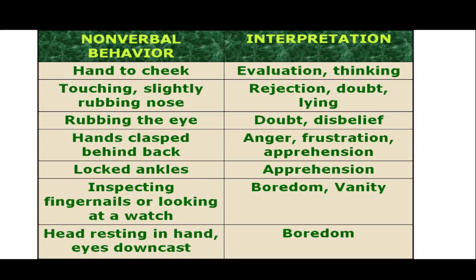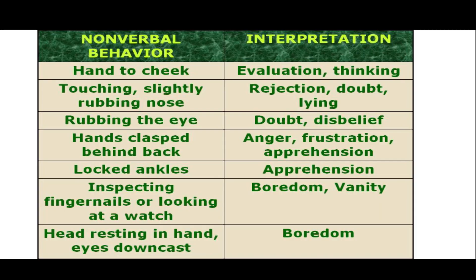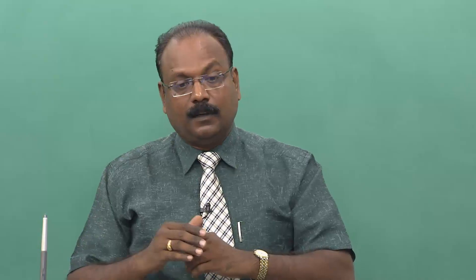Hands clasped behind the back — you are just hiding that it is clasped — can show that you are angry, frustrated, or apprehensive. Locked ankles: again apprehension. Inspecting fingernails or looking at a watch while talking to somebody frequently indicates 'I am bored,' or it can show vanity — 'What kind of nonsense are you talking?' It is suggested that if you know somebody is boring you, looking at your fingernails or at the clock on the wall will indicate to the person that they are boring you or wasting your time.